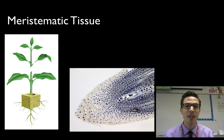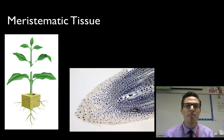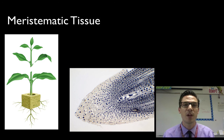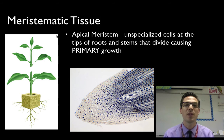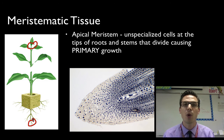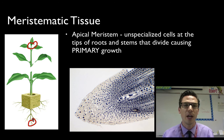Meristem cells have really one job: to divide and do mitosis. As they divide and produce more cells, the plant gets larger. Think about this scenario: if you carved your initials into a young tree five feet off the ground, and came back 50 years later, those initials would still be five feet from the ground, because plants only grow from the tips — from the tips of the stem and the roots. This is thanks to a type of meristem cell called apical meristem, responsible for primary growth, meaning getting taller and deeper into the ground.